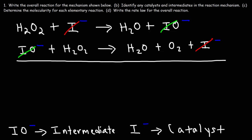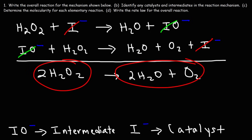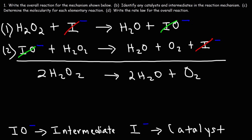Now let's write the overall reaction. On the left side we have two hydrogen peroxide molecules. On the right side we produce two water molecules and one oxygen molecule. So the decomposition of hydrogen peroxide into water and oxygen gas is accelerated by the iodide catalyst. For the first step we have two reactant molecules — it's bimolecular. The second step is also bimolecular.